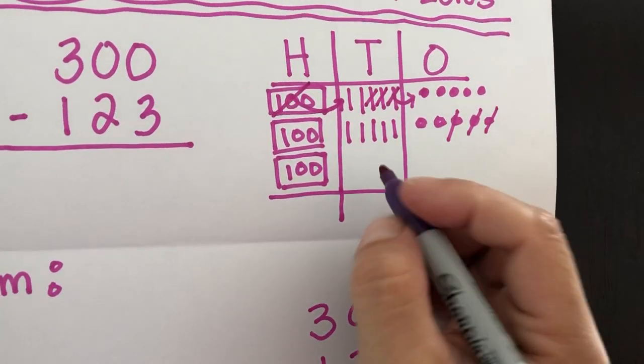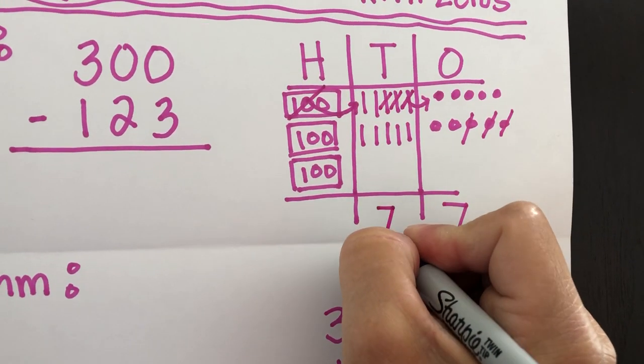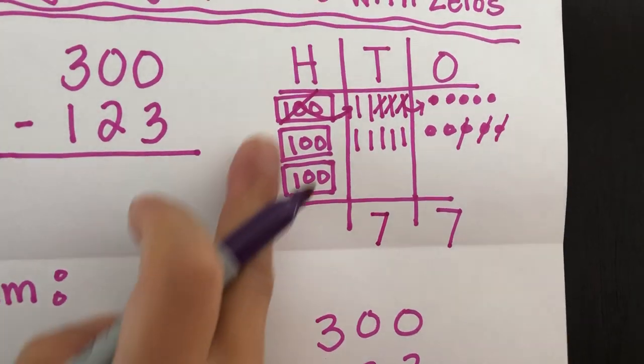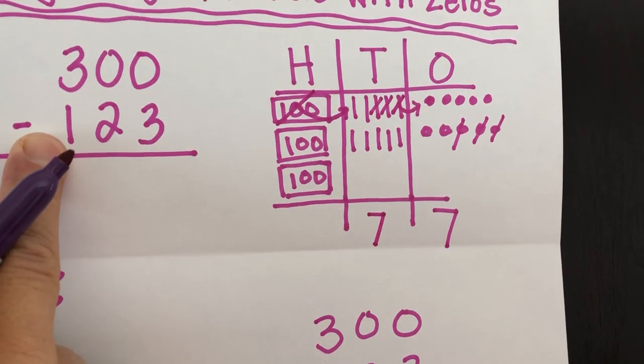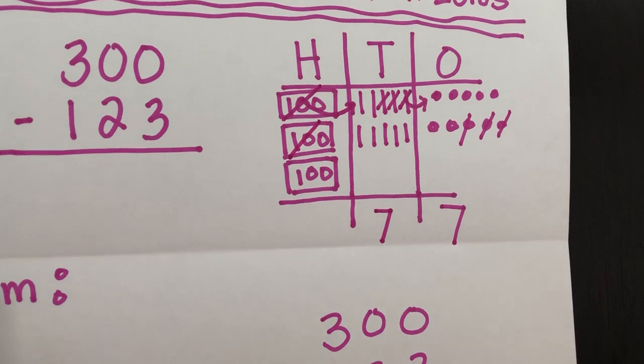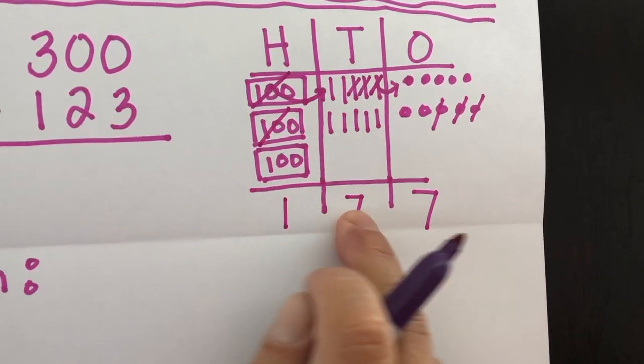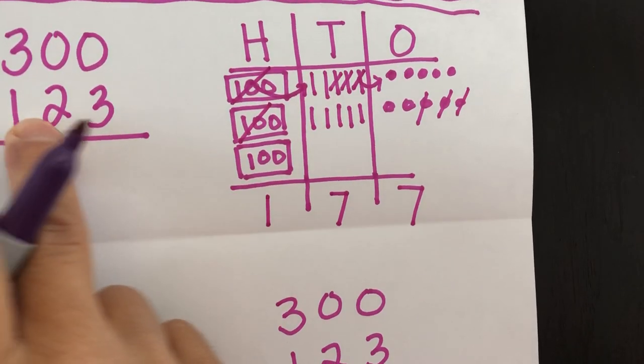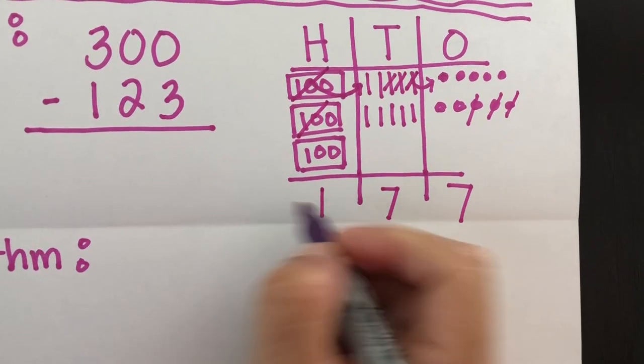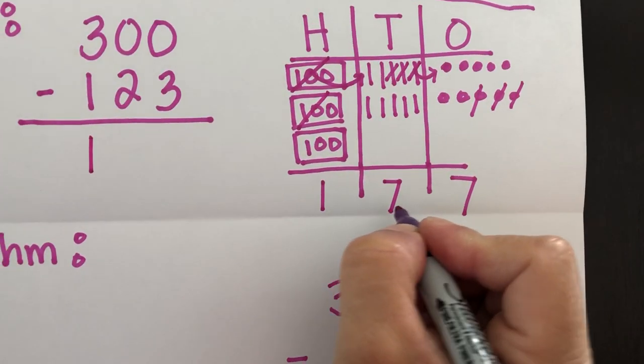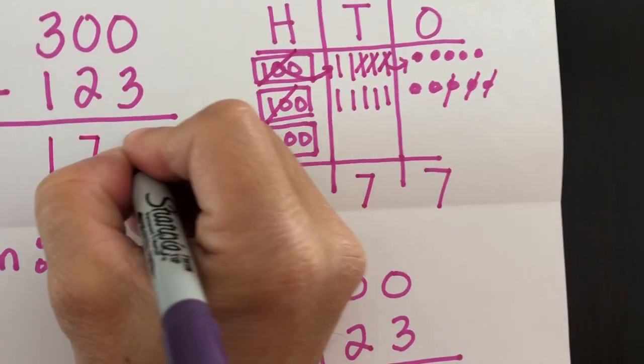So we have seven tens, which is really 70, but we're just going to write seven. Now the hundreds column, it says to subtract one. So we're going to subtract 100. And now we have 100 left over. So our difference, 300 minus 123, is 177. And also I'll write my answer here.